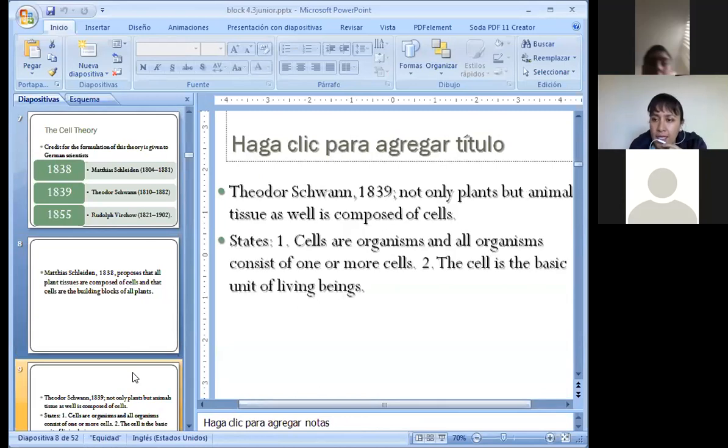Then Theodor Schwann in 1839 said that not only plants, but also animal tissue is composed of cells. He said two things. The first one, cells are organisms, and all organisms consist of one or more cells. And the second one, the cell is the basic unit of life in living beings.